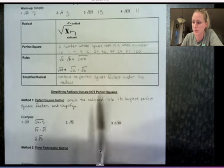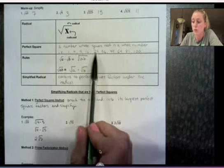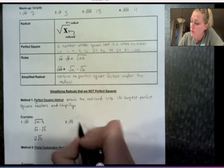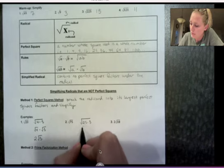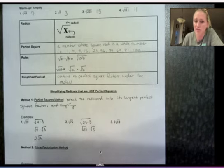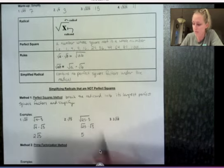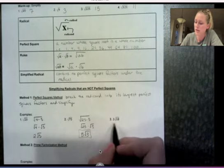All right, 75. So I'm looking for a perfect square that goes into 75 evenly. So 25 goes in. 25 times 3. Break it into two separate. And square root of 25 being a perfect square, I can write it as just 5. And then times square root of 3.